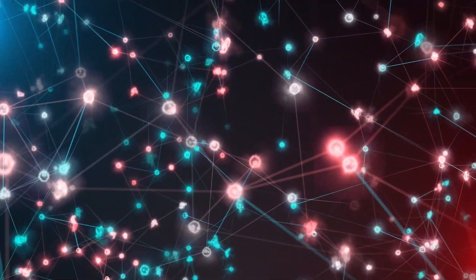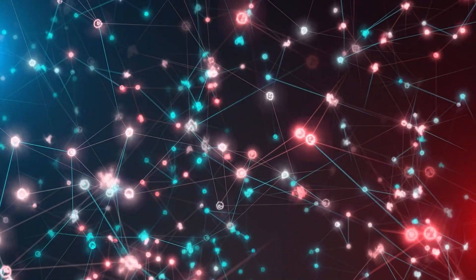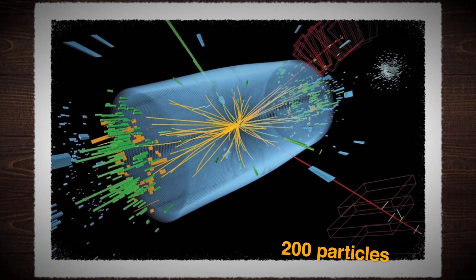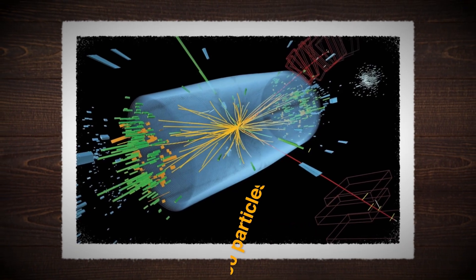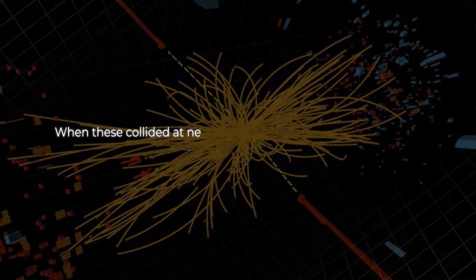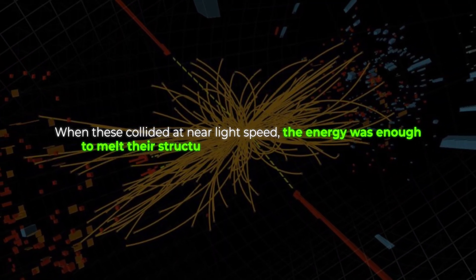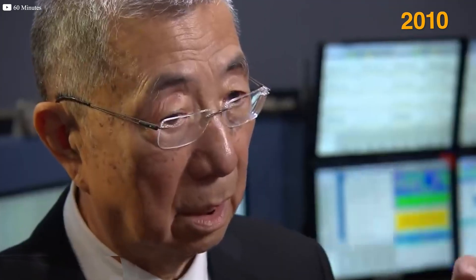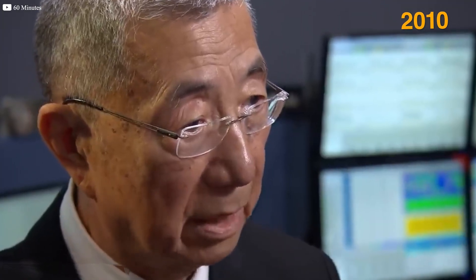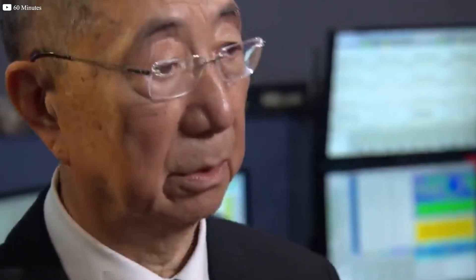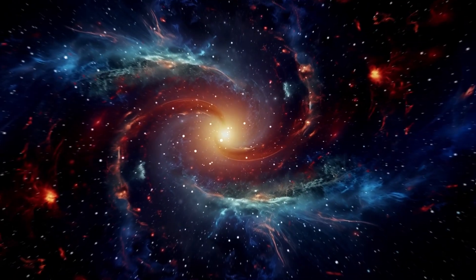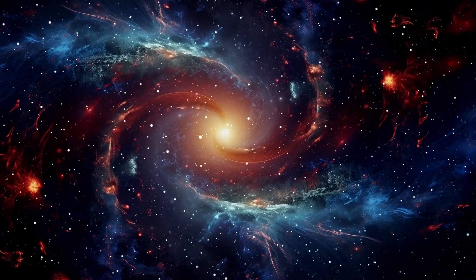To reach this state, researchers did not collide protons but heavy lead nuclei. Each nucleus carried more than 200 particles inside. When these collided at near light speed, the energy was enough to melt their structure and form quark-gluon plasma. The first success came in 2010. The detectors saw matter behaving like a perfect fluid, flowing smoothly even at unimaginable temperatures. It was a glimpse of the universe in its earliest heartbeat.